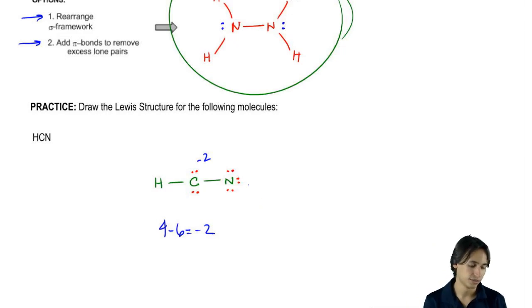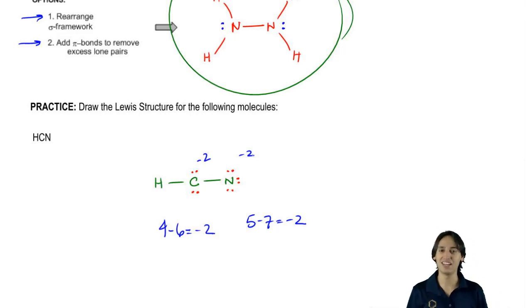The nitrogen wants to have five, but it actually has seven. So this one's going to be negative two. So we have these two very negative formal charges and this is a terrible structure. Just so you know, this couldn't even exist.